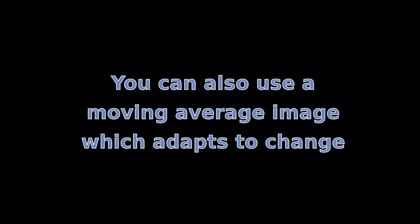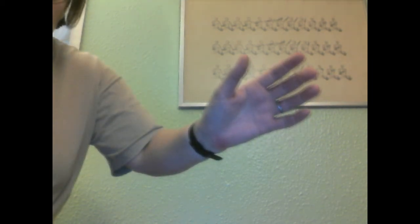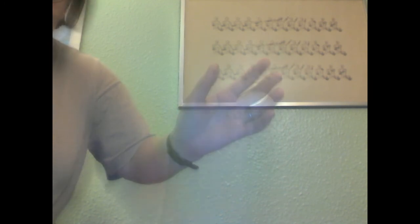But you need an empty frame for that approach. You can instead use adaptive models with a moving average background subtraction, which is what you see here. It depends on how quickly you update the average. This is the background model, and you can see that as things remain still, they become part of the background model.